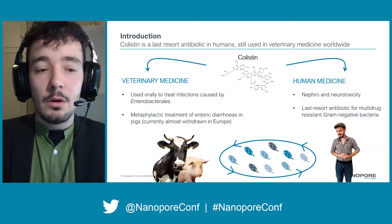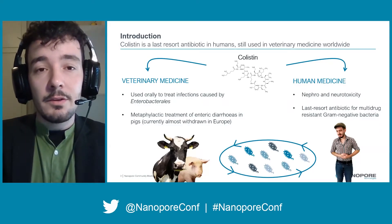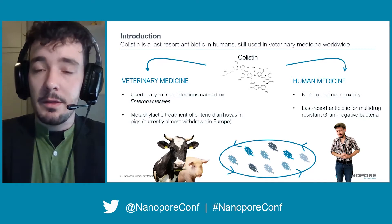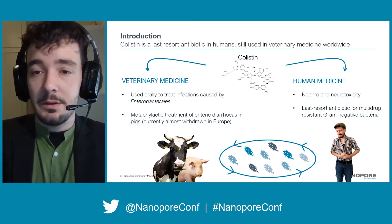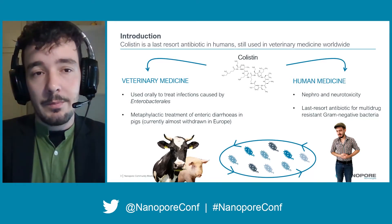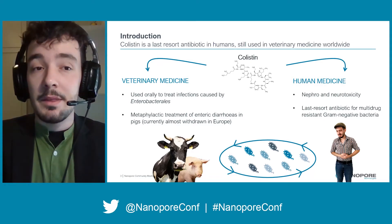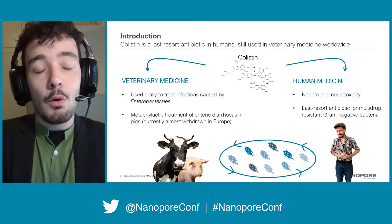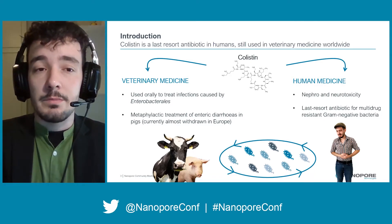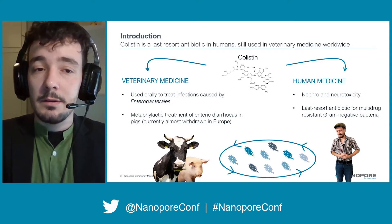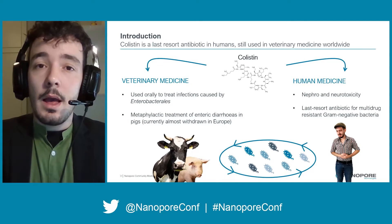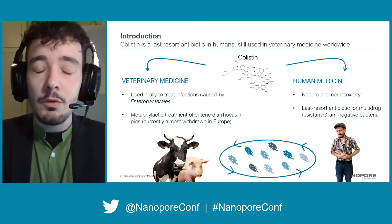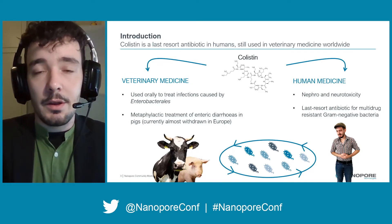Colistin is a last resort antibiotic in human medicine due to its nephro and neurotoxicity. However, in veterinary medicine it is still used orally to treat infections caused by Enterobacteriales as a metaphylactic treatment of enteric diarrheas, although currently it is almost withdrawn in Europe.